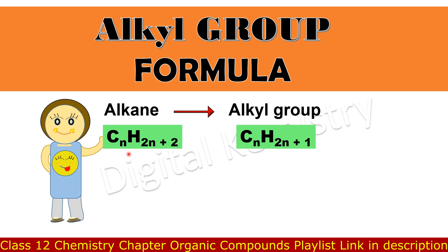Ab sawal yeh hai ki alkyl group ko hum kis formula ke zariye represent karte hain. Jaisa ki humne discuss kiya, jaise hi alkane mein se ek hydrogen ko remove kiya jata hai, to iske result mein alkyl group ki formation hoti hai. So, in general formula mein bhi aap dekh sakte hain ki alkyl group ka general formula hai CnH2n+1.